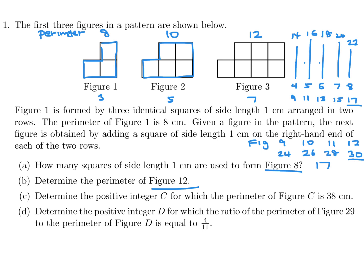Determine the positive integer C for which the perimeter of Figure C is 38. All right. So, you know, you just continue this, I guess. So if you have the figure number and then the perimeter, let's see.